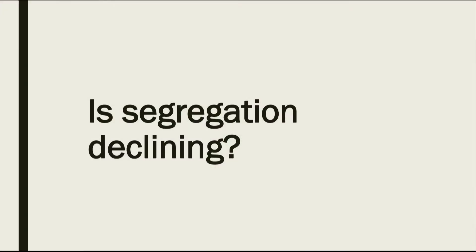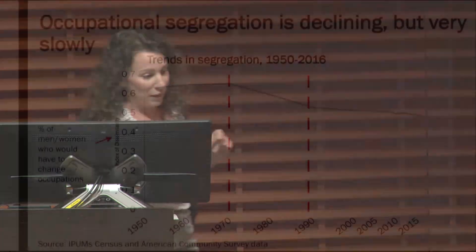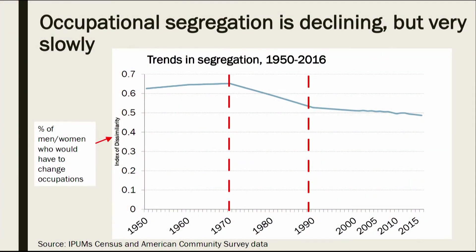So half of women — or a quarter of men or women — would have to switch occupations for integration to be achieved. To put this number in context, we need to compare it to previous trends to understand whether we are on the path to integration, how far off we are, and whether segregation is actually decreasing.